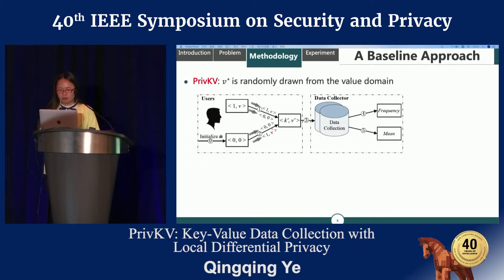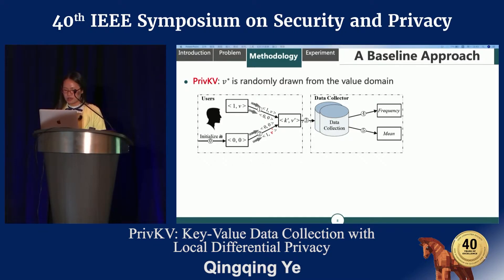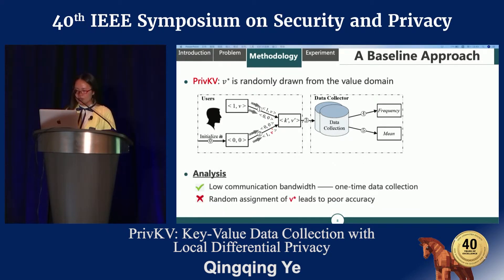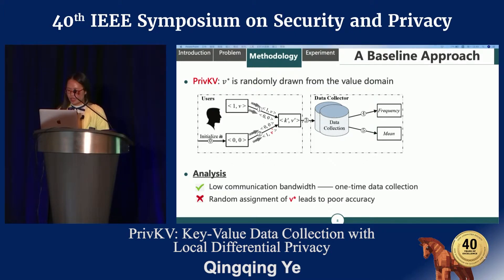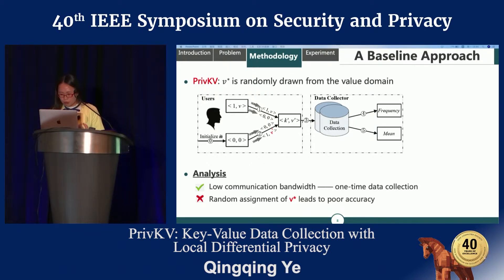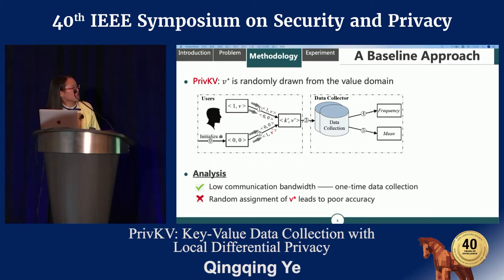Here we give our baseline approach, where the assigned value is randomly drawn from the value domain. The framework of data collection is a one-time data collection, so it has low communication bandwidth. However, this approach cannot achieve satisfying accuracy due to its poor assignment of the value, since the value is just randomly drawn from the value domain.